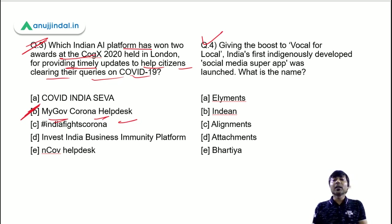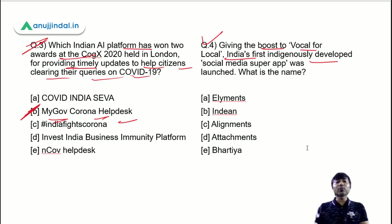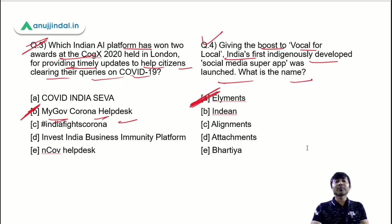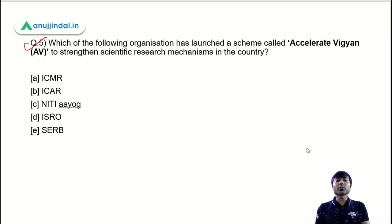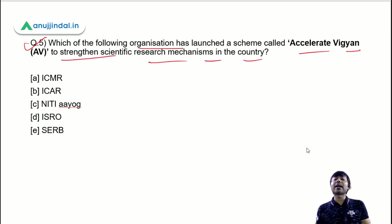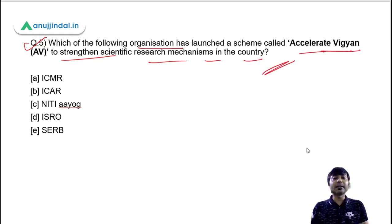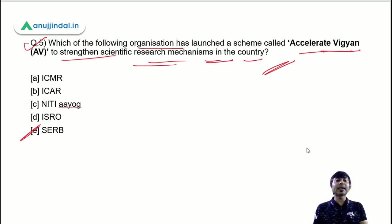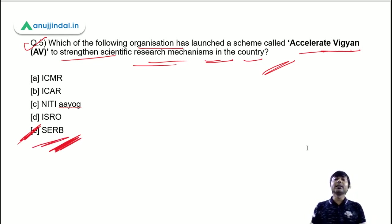Question 4: India's first indigenously developed social media super app, giving boost to vocal for local — what is its name? The correct answer is option A — Elyments. Question 5: Which organization launched a scheme called 'Accelerate Vigyan' to strengthen the scientific research mechanism in the country? The correct answer is option E — SERB, which stands for Scientific and Engineering Research Board.